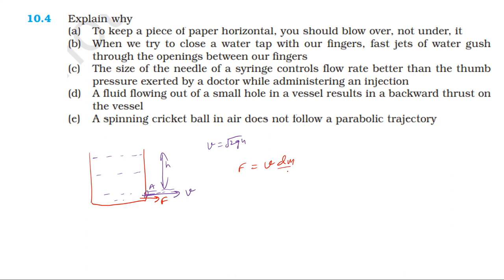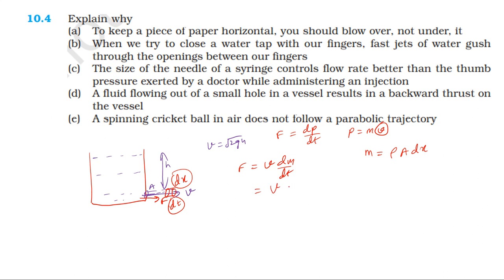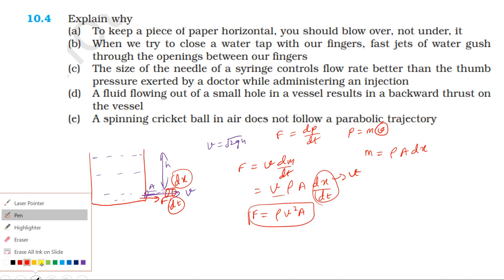The velocity is equal to V dm by dt, which is equal to dp by dt. If we consider a small length dx in time dt, then dm is equal to rho times A times dx, and this gives us the momentum and force relationships for fluid flow.